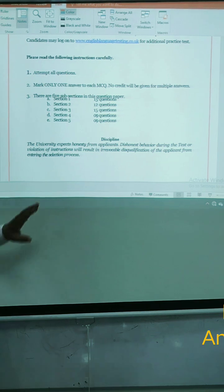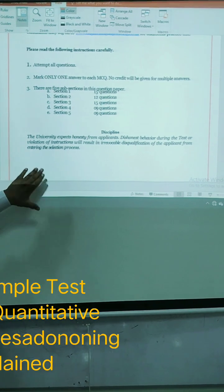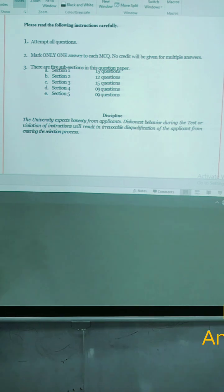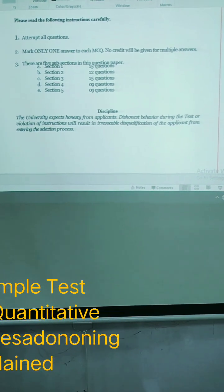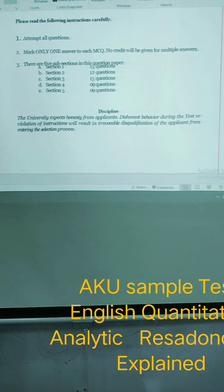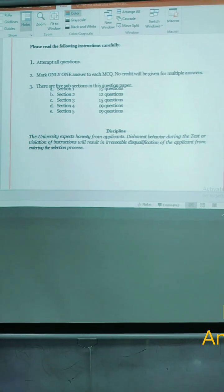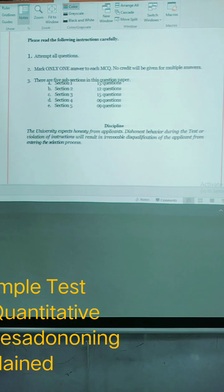The actual question is, the university expects honesty from applicants and dishonest behavior during the test or violation of instructions will result in irrevocable disqualification of the test.